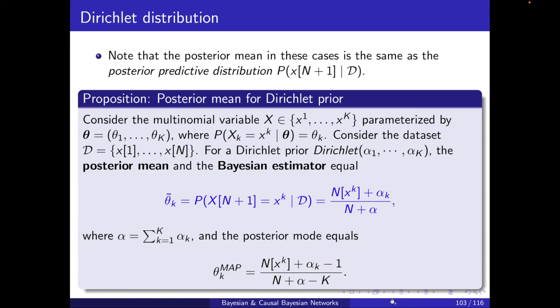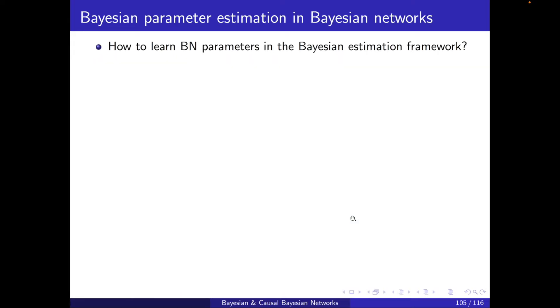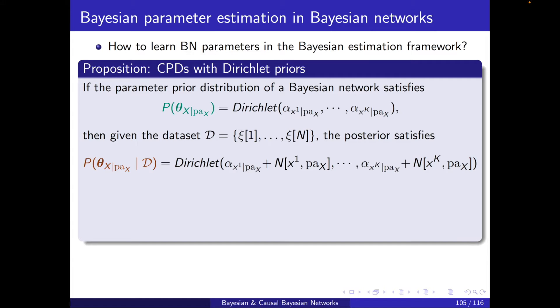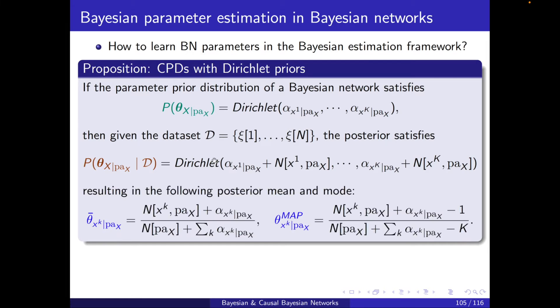We ended up with the result that if a categorical variable follows a Dirichlet prior, then its posterior will also be Dirichlet. More importantly, its posterior mean and mode can be calculated using simple formulas. We can extend this result to a CPD case where the CPD of a Bayesian network follows a prior distribution — so it's categorical and following a prior distribution — and P of theta of x conditioned on a realization of its parents is a Dirichlet. Then the posterior will also be a Dirichlet, and the posterior mean and mode can be calculated in this way.